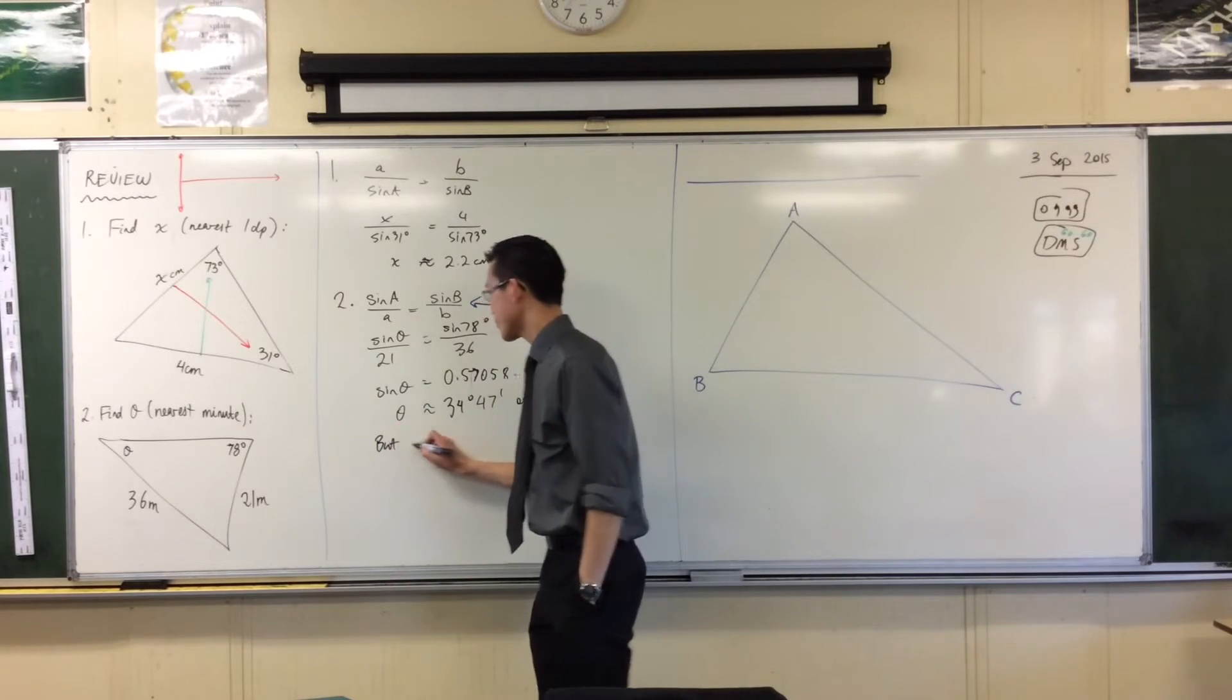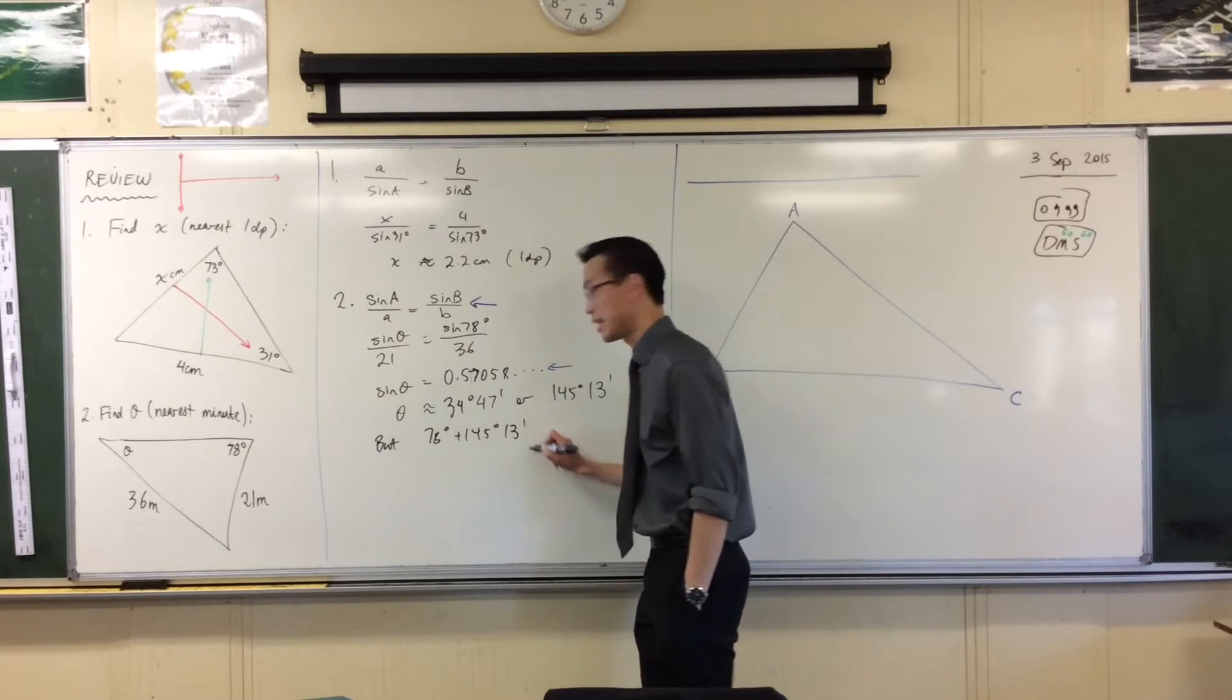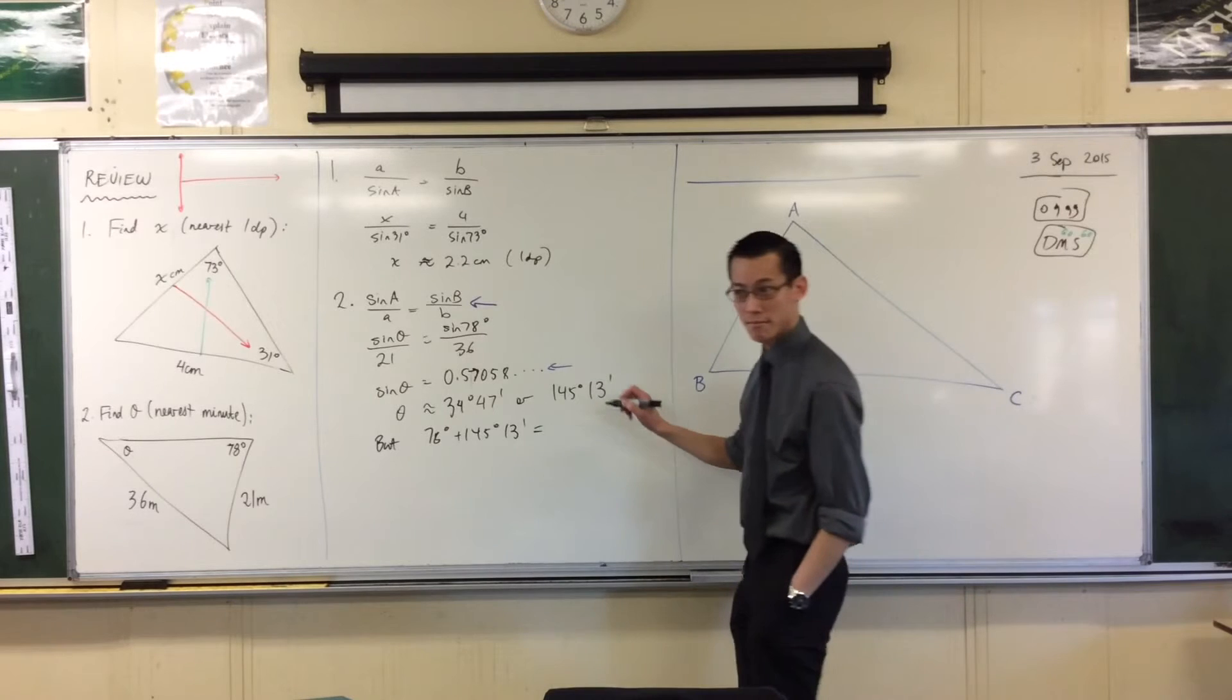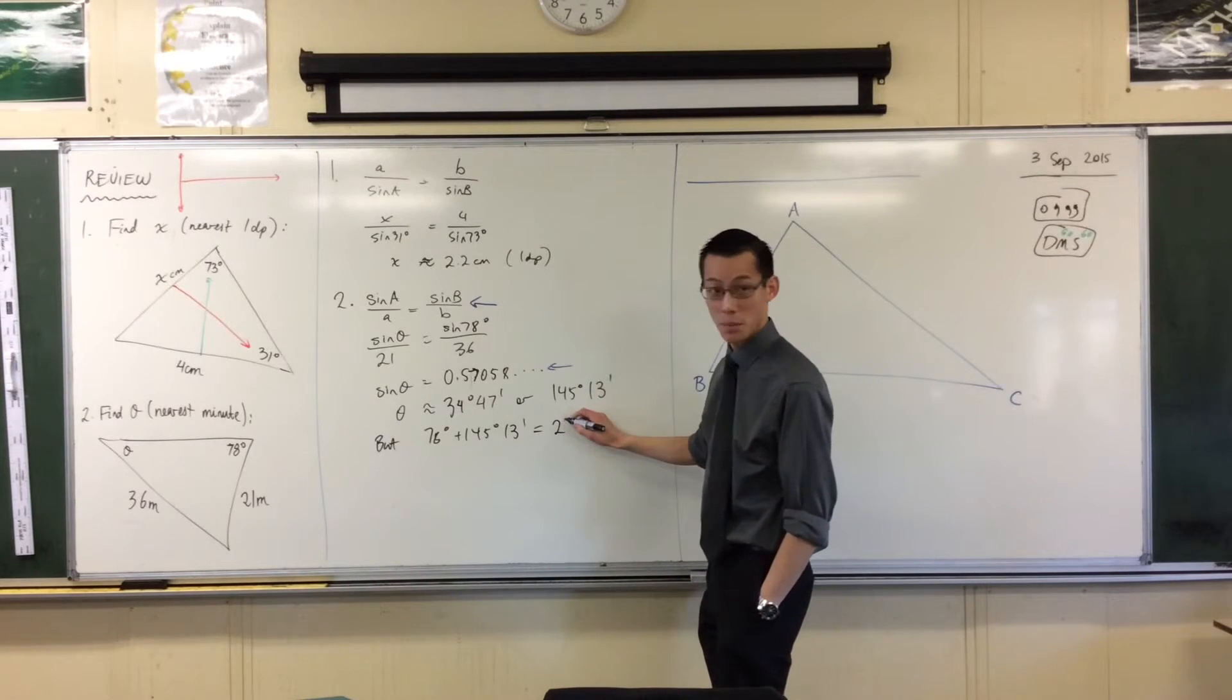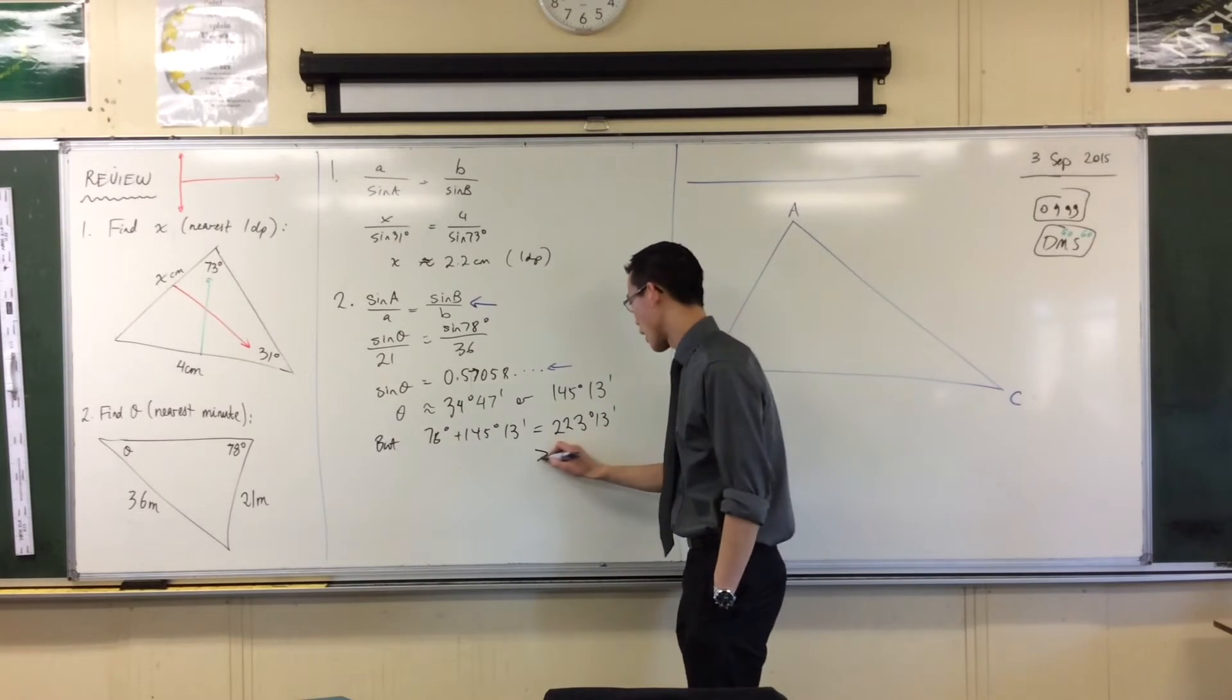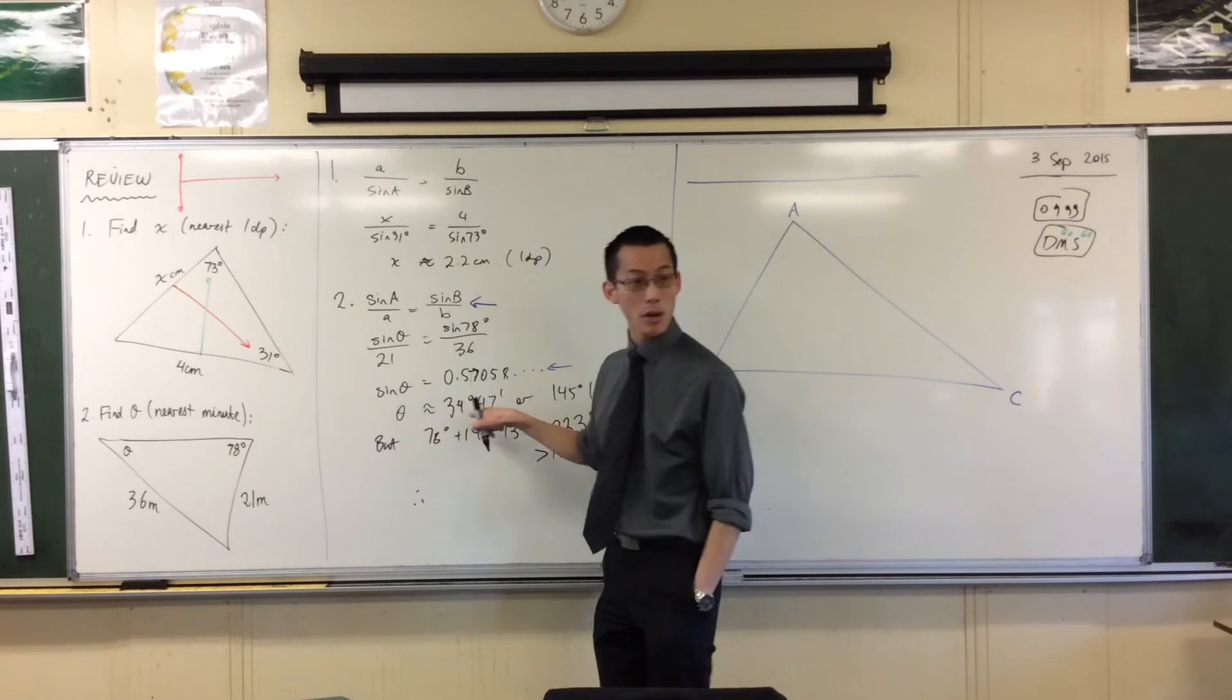Okay? So I would say, but the angles I've already got, 78 degrees plus 145 degrees and 13 minutes. What is it actually equal to? Is it 223? Can someone verify it for me? I'm just doing it in my head. Someone get their calculator. I know it's 200 and something. It is 223. And 13 minutes, right? And that's greater than 180 degrees, right? Therefore, I can only get one solution. It's only going to be this one.